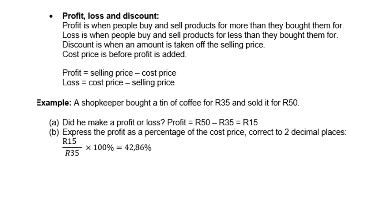Example: a shopkeeper bought a tin of coffee for 35 rand and sold it for 50 rand. Did he make a profit or a loss? He made a profit because 50 minus 35 is 15 rand profit. B: express the profit as a percentage of the cost price, corrected to two decimal places. So 15 out of 35 times 100% gives you 42.86%.